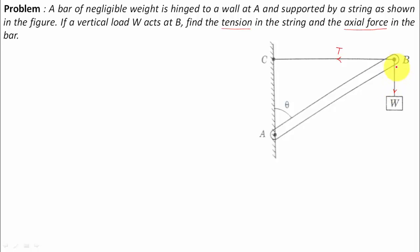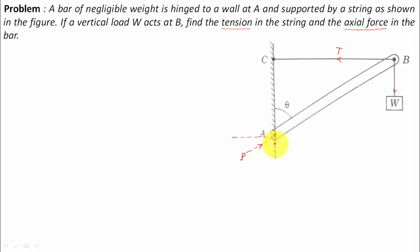The nature of this W force is such that it will try to pull the bar in the downward direction. When that happens, this bar is going to push the wall towards the left-hand side, and the wall will react by applying a similar force in the opposite direction. Let's represent this reaction force as P. There will be a horizontal component and a vertical component for this P force — it acts along the axis of bar AB.